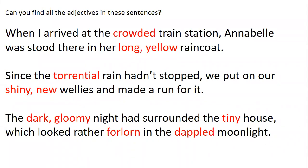So we've got 'crowded' — that tells you more about train station. 'Long' and 'yellow' tell you about a raincoat. 'Torrential' tells you more about the rain. 'Shiny' and 'new' describe the wellies. The night is described as 'dark' and 'gloomy,' 'tiny' describes the house, 'forlorn' also describes the house, and 'dappled' describes the moonlight.